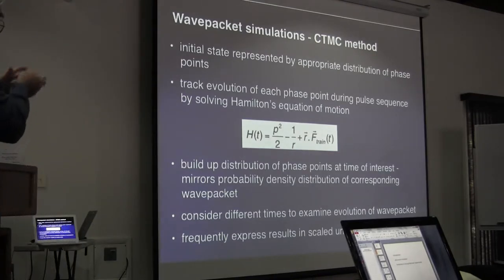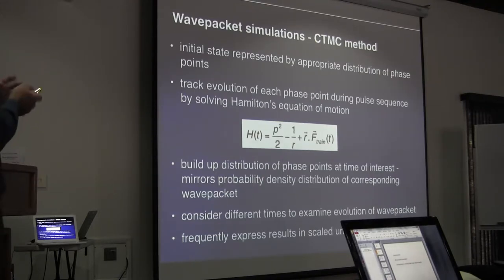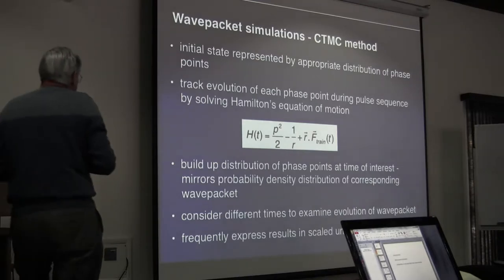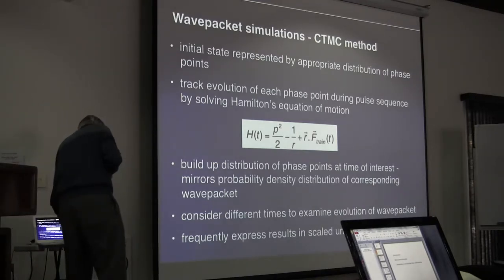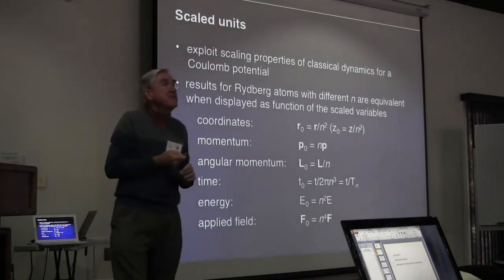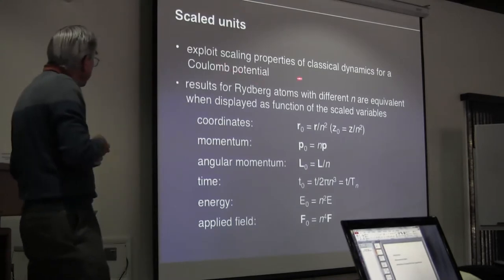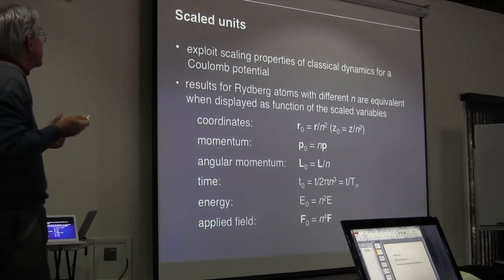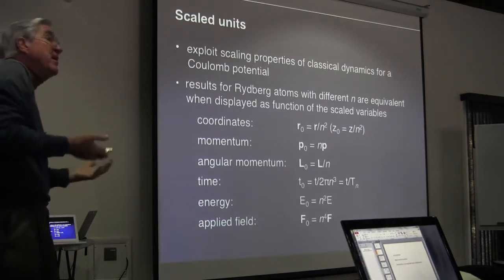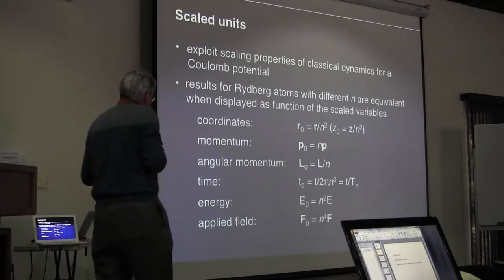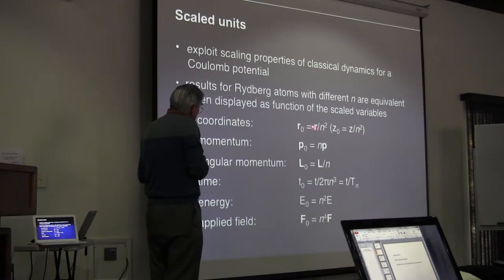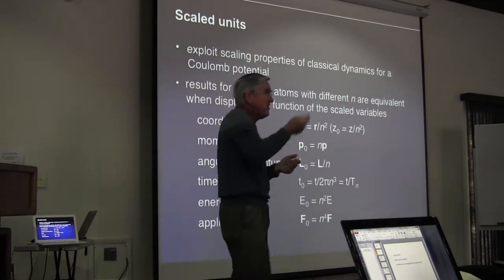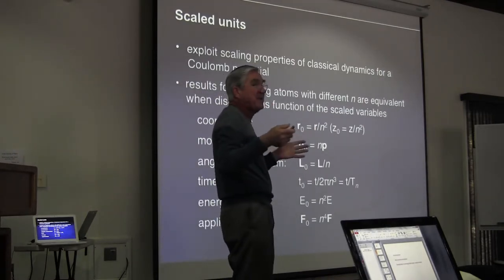You compute the distribution of final phase points at different times to examine the final evolution of the wave packet. Throughout this talk I will express the units in terms of scaled units, exploiting the scaling properties of classical dynamics for a Coulomb potential. Results for different n become equivalent when displayed as a function of these scaled variables.